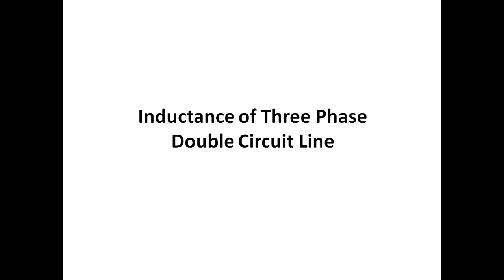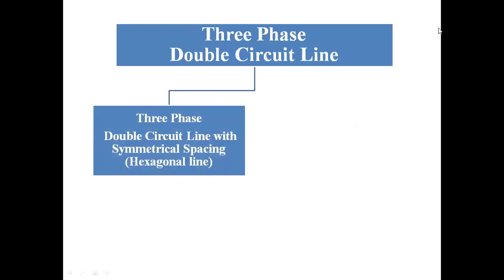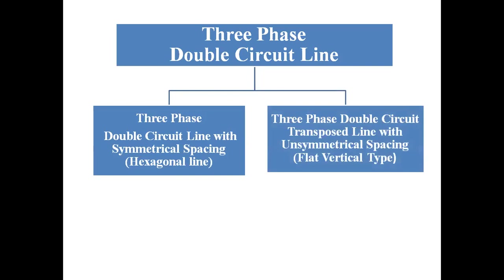For a three-phase double circuit transmission line there are two types. The first is called the three-phase double circuit line with symmetrical spacing, also known as the hexagonal line. The second is called the three-phase double circuit line with unsymmetrical spacing, which is the flat vertical type.